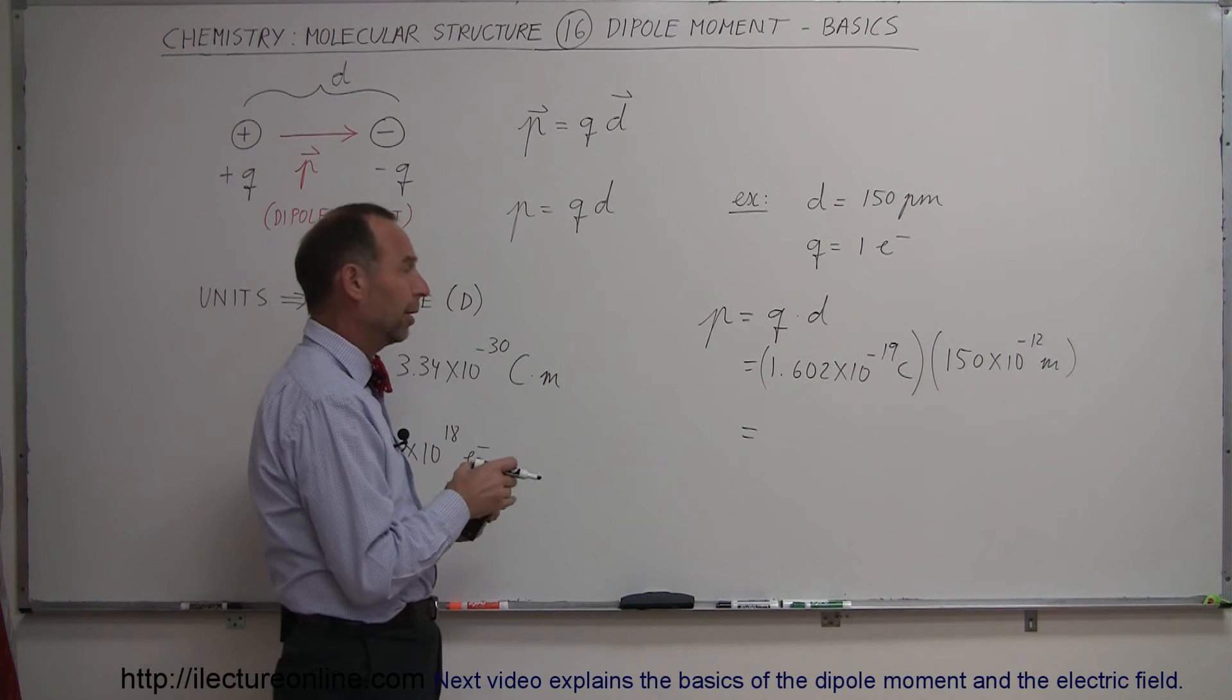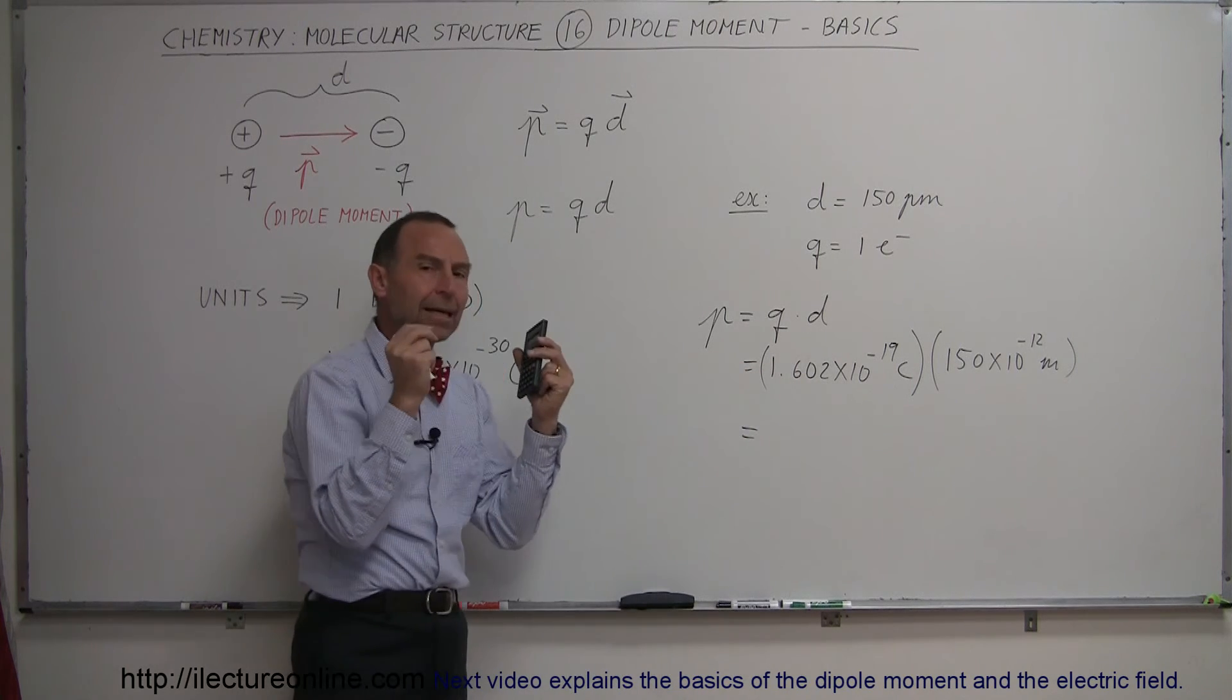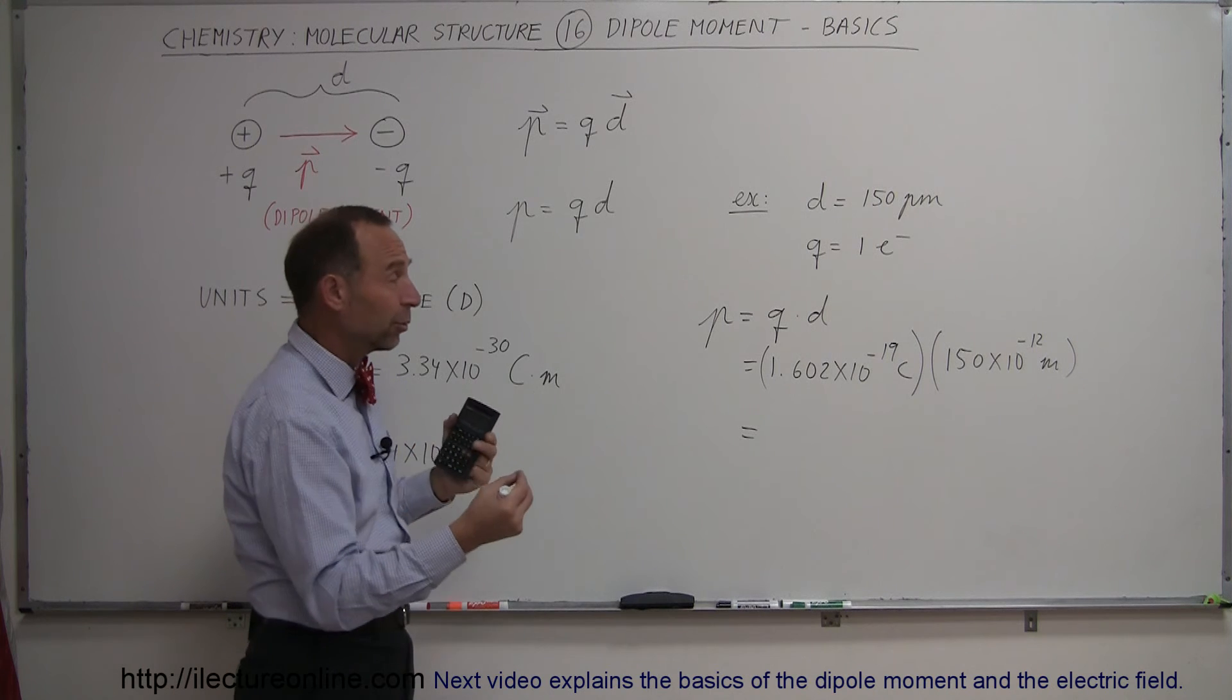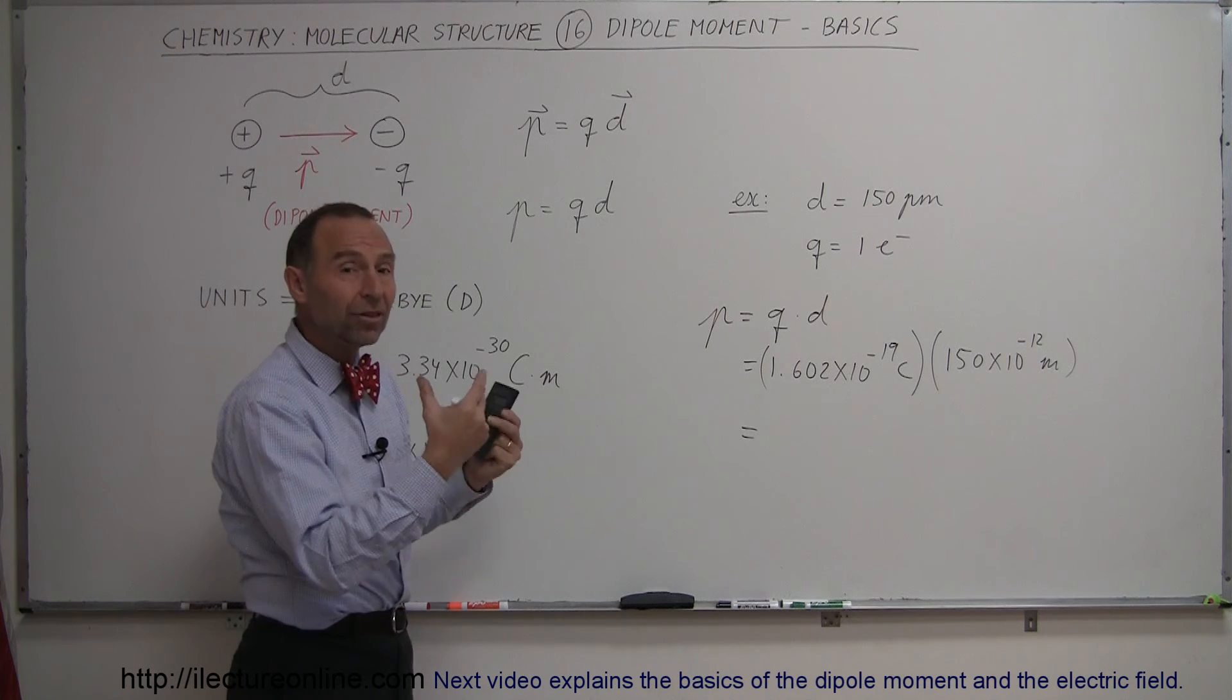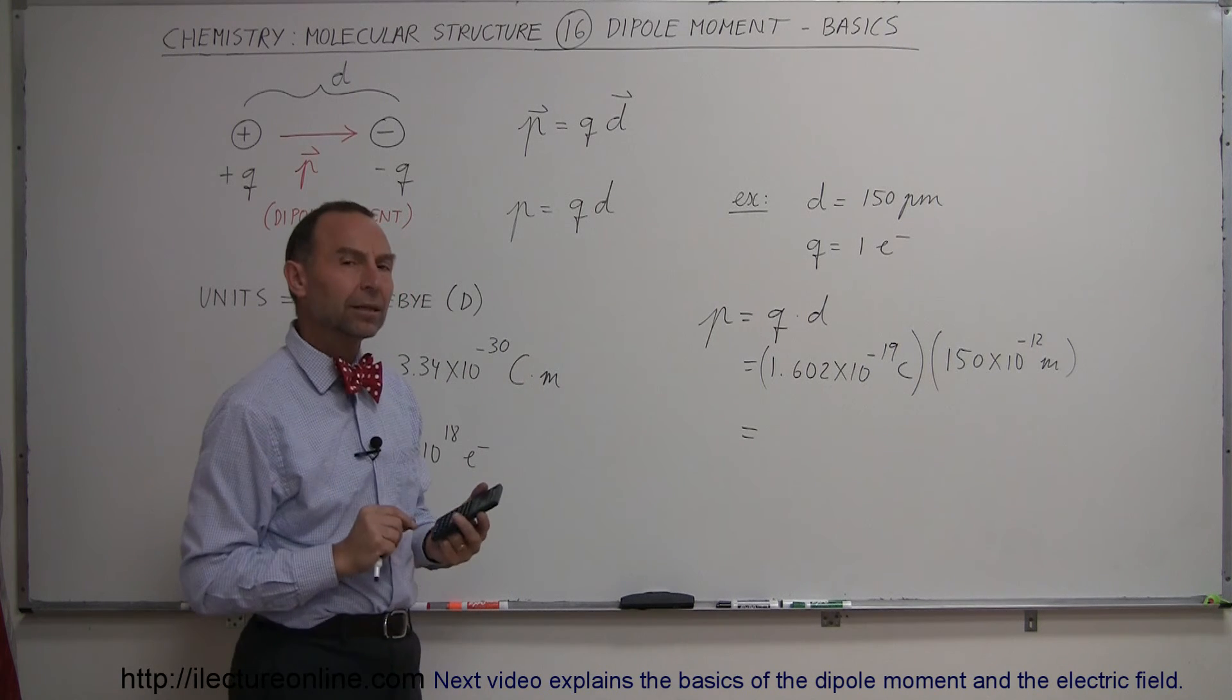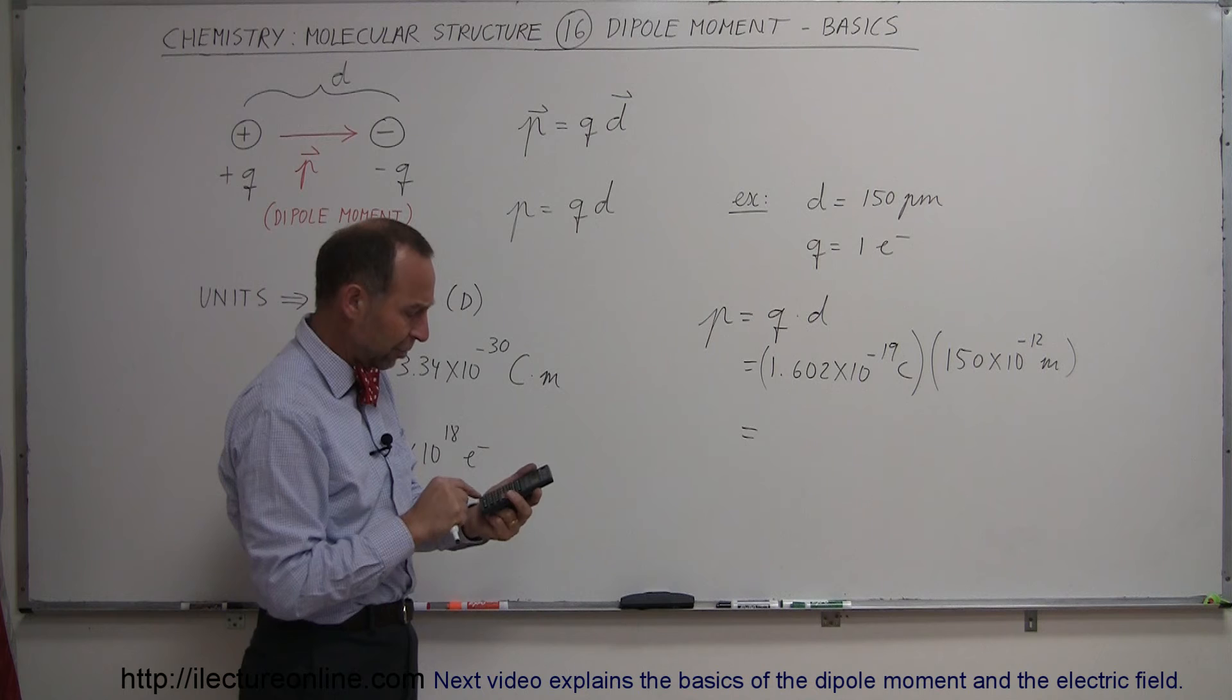So for a molecule, we'll end up calculating and figuring out the charge separation of the molecule, how far apart they are from each other, which is typically the bond distance, the bond length between the two atoms. And from that we should be able to calculate the dipole moment of a molecule. So this is just a simple example of how to do that.